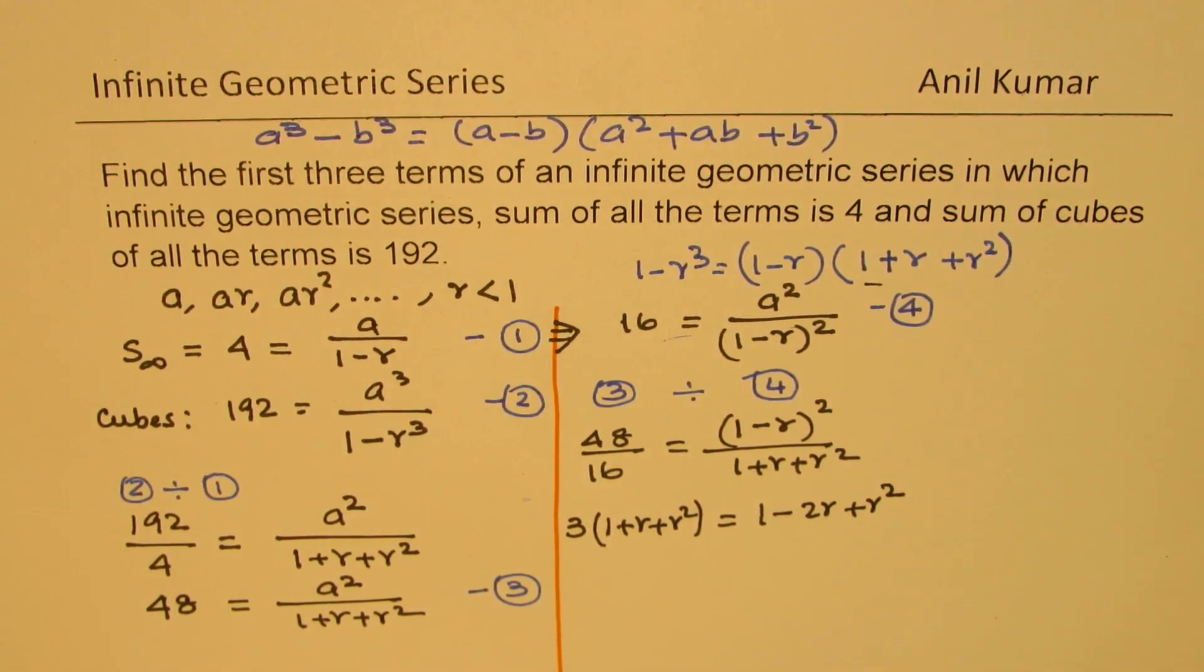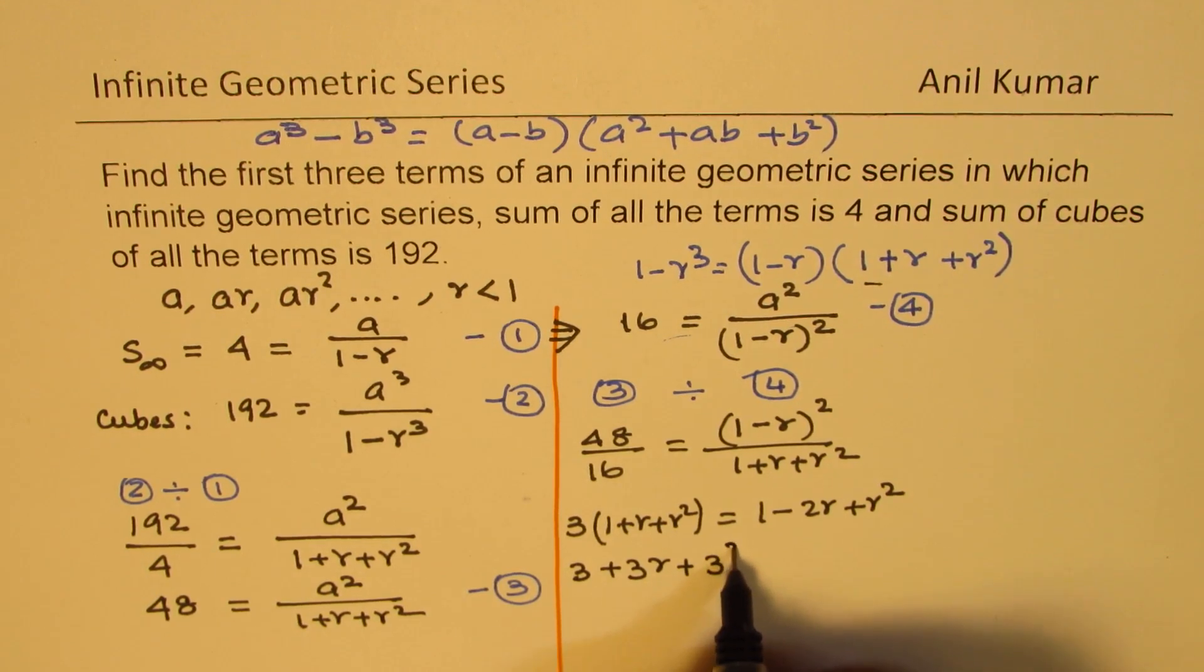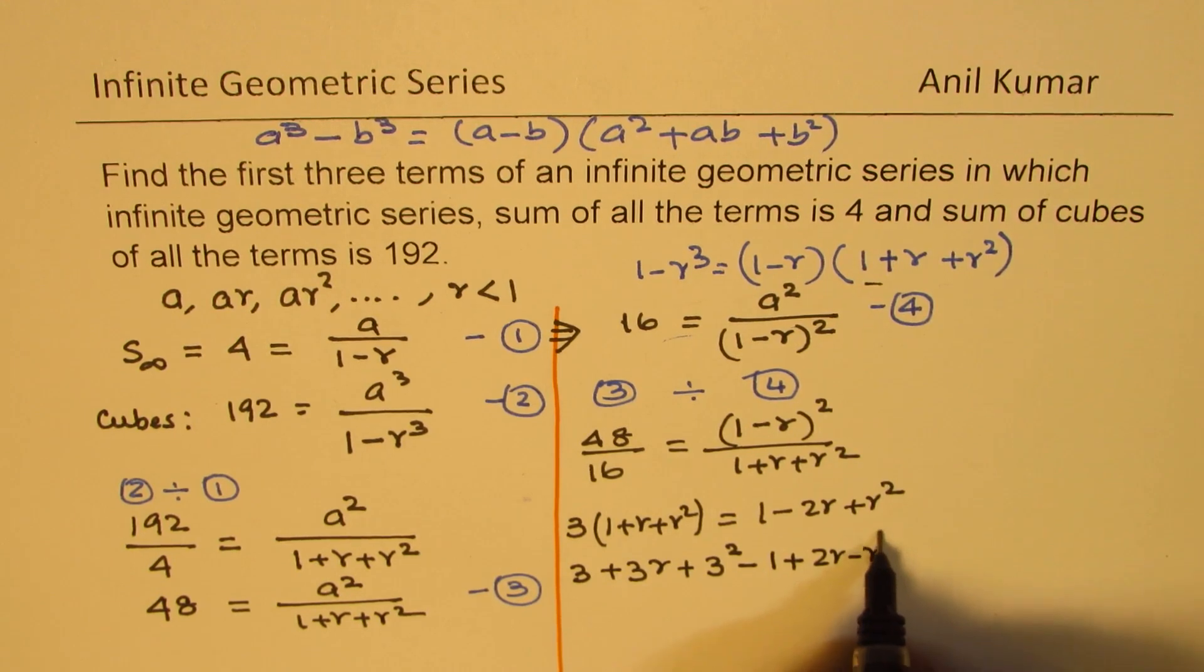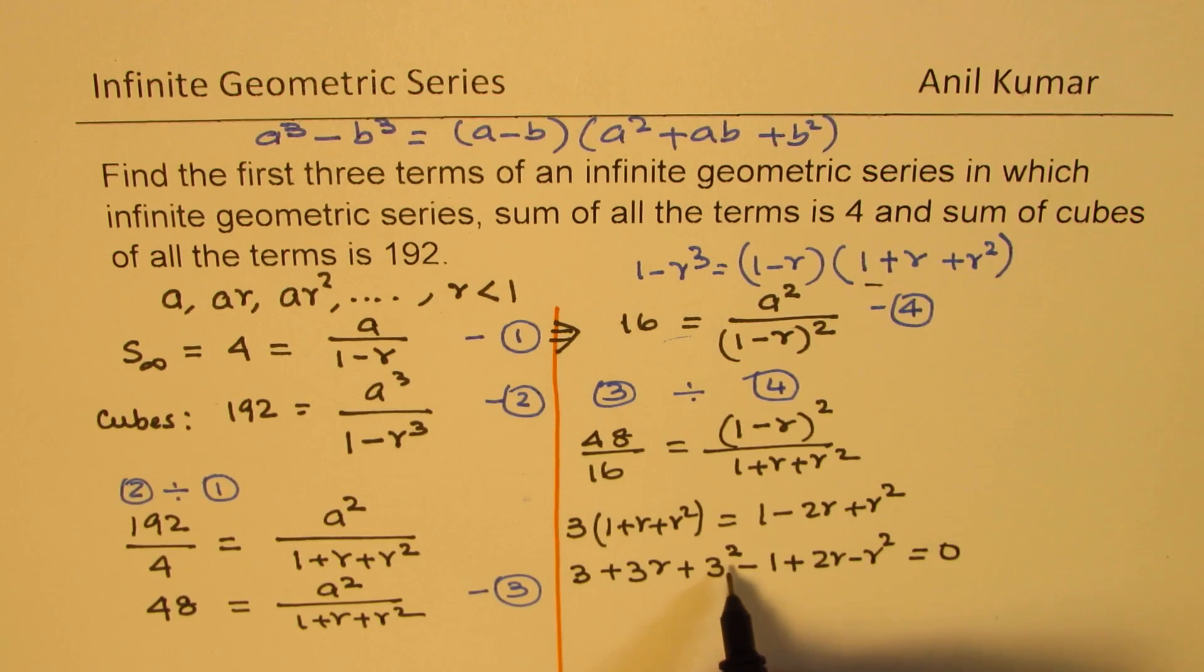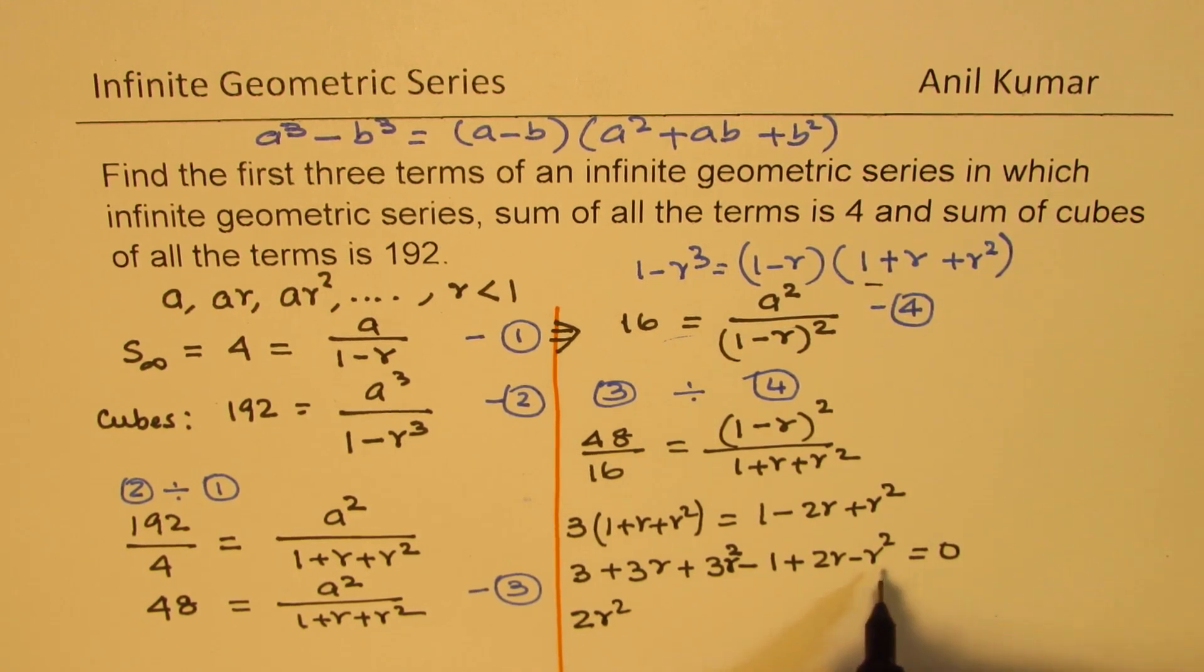That gives you a quadratic equation. We get 3 plus 3R plus 3R square, bringing these terms to the left, minus 1 plus 2R minus R square equals to 0. As far as R square terms are concerned, we get 2R square, combining these two, 2R plus 3R is 5R. 3 minus 1 is 2, equals to 0. So we get 2R square plus 5R plus 2 equals to 0.